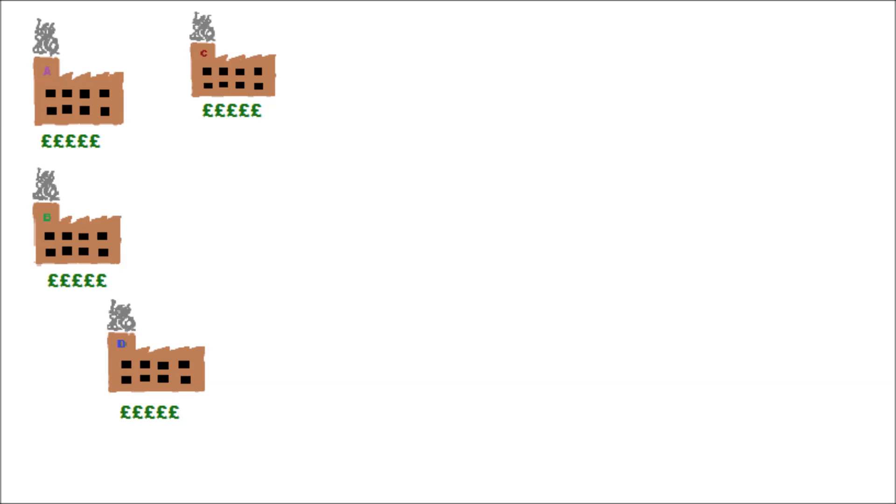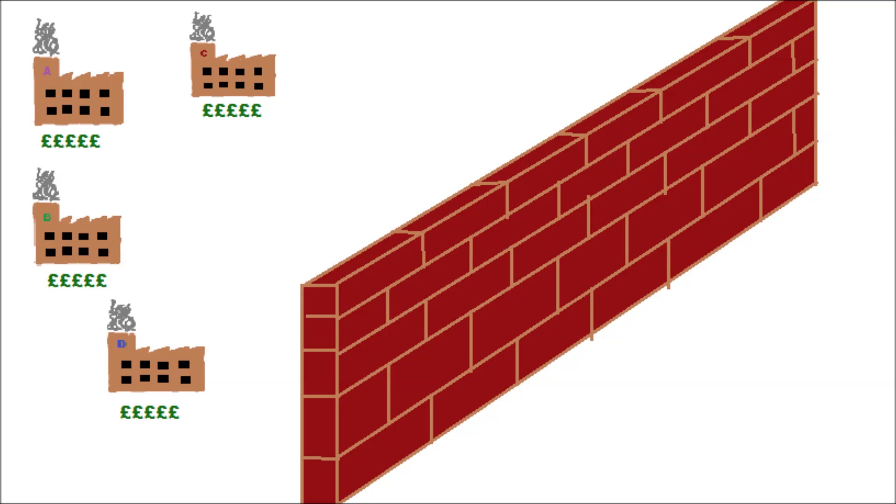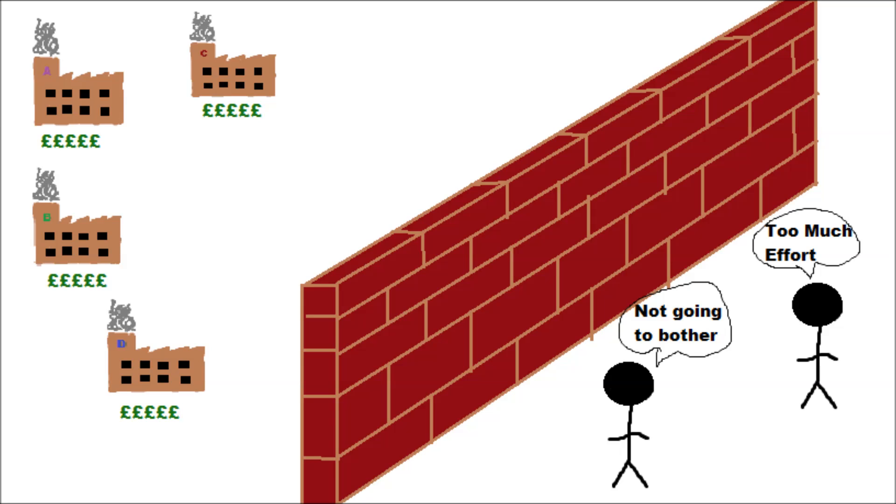There are high barriers of entry into an oligopoly market, helping existing companies keep their profits. These being economies of scale, as well as access to expensive and complex technology, meaning that the existing companies can produce their product more cheaply and efficiently than any smaller new companies. This helps to discourage anyone from trying to enter the market.